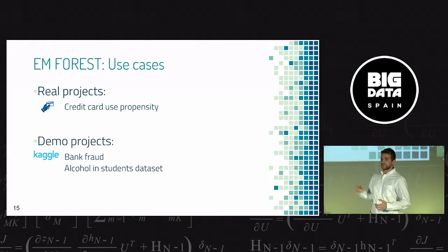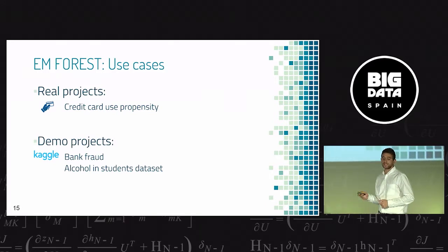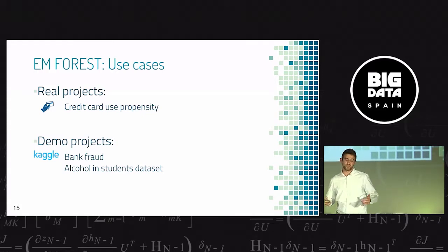These are the use cases of this algorithm, a real project where we apply this algorithm to predict the propensity of the use of credit card. That's a real project with real money. If we have applied this algorithm, it's because it obtains the better score than any other algorithms. Also, it's been tested over Kaggle datasets with really good results.